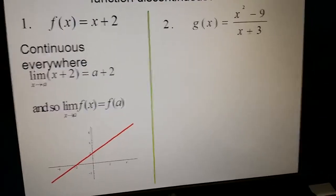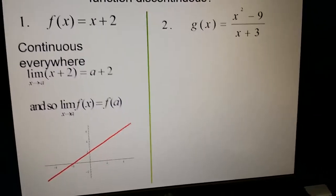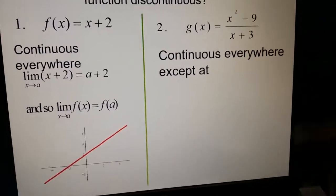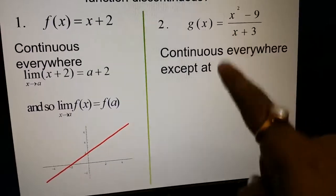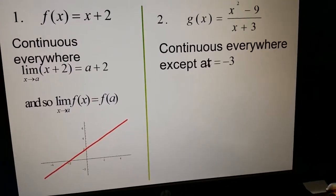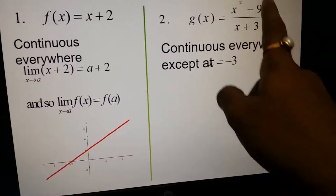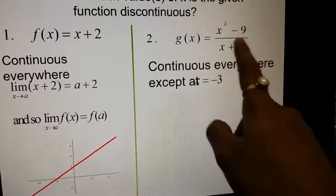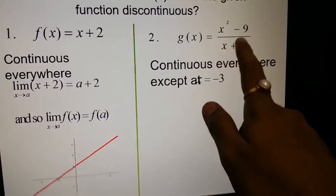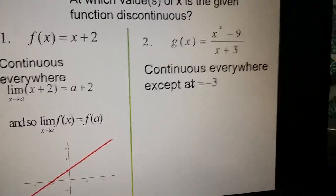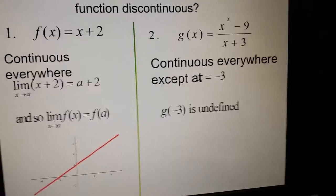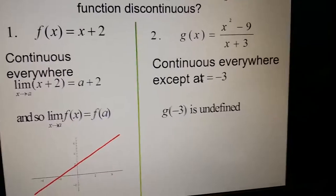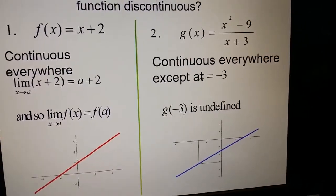Similarly, taking another function g(x) = (x²-9)/(x+3), this function is continuous everywhere except at x = -3. If we put x = -3, the denominator becomes -3+3 = 0, making f(x) undefined. Since something divided by 0 is always undefined, g is not continuous at x = -3.